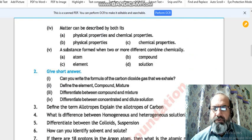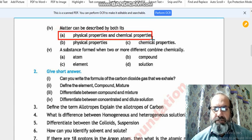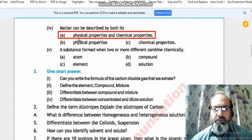Number 4, matter can be described by both its physical properties and chemical properties. Option A is the right option because matter can be described by both of its properties.